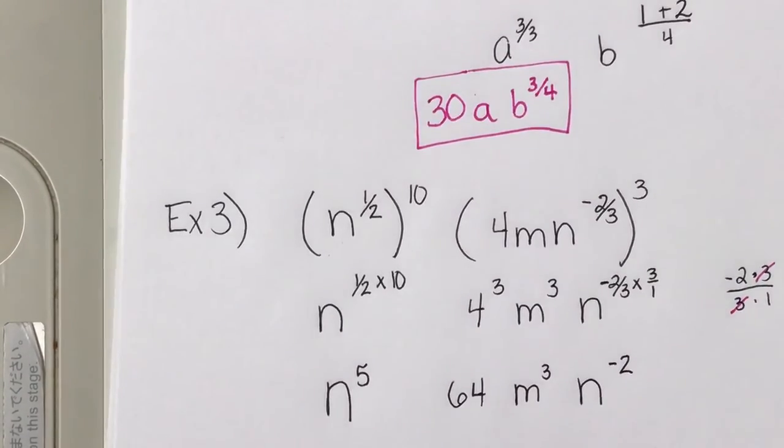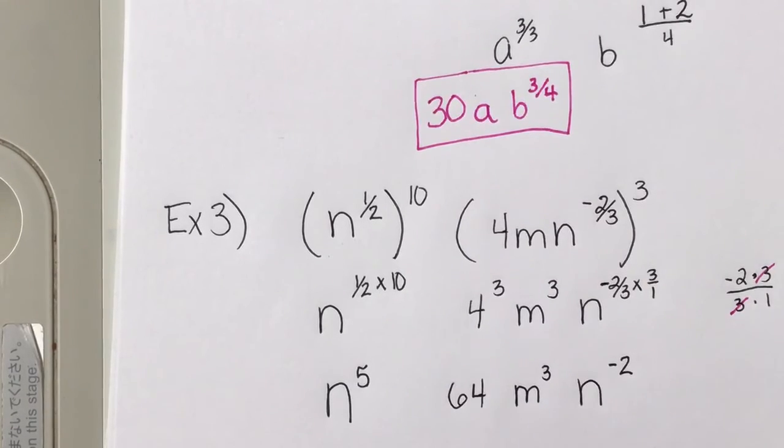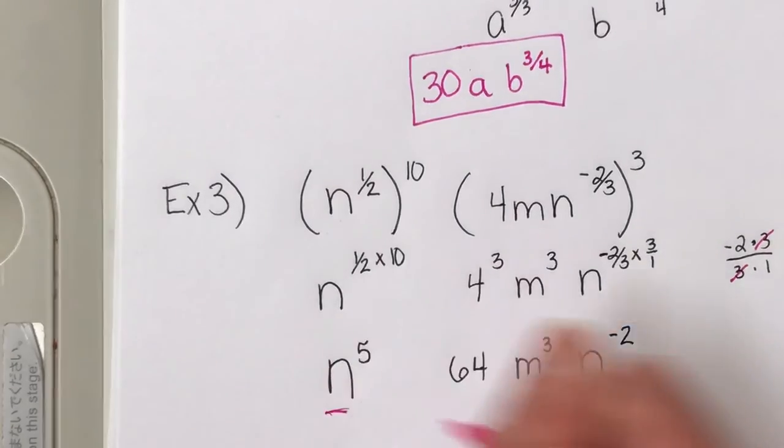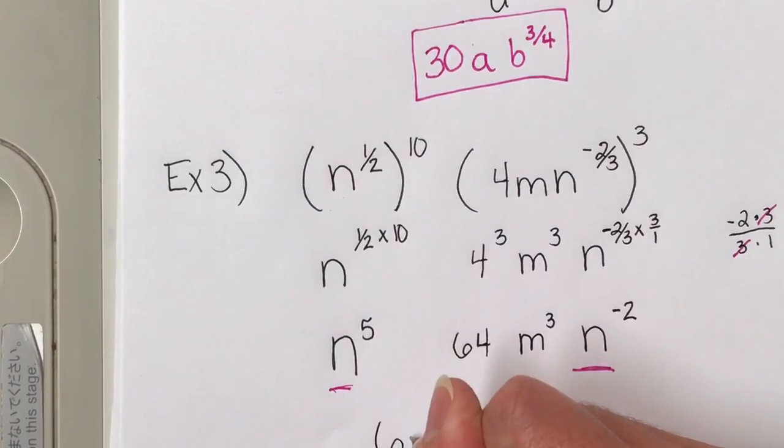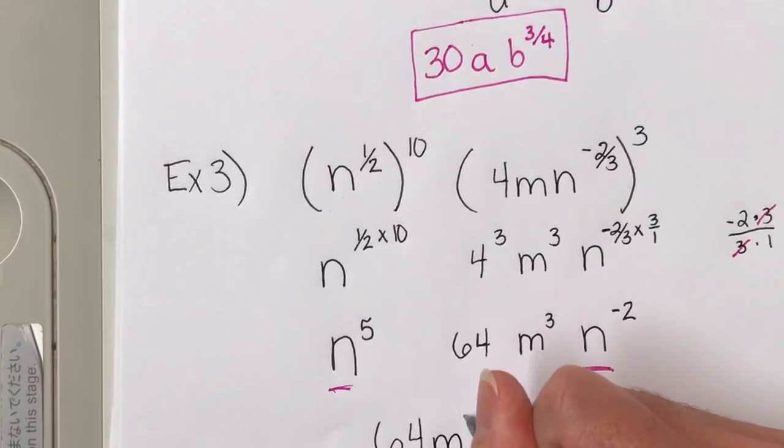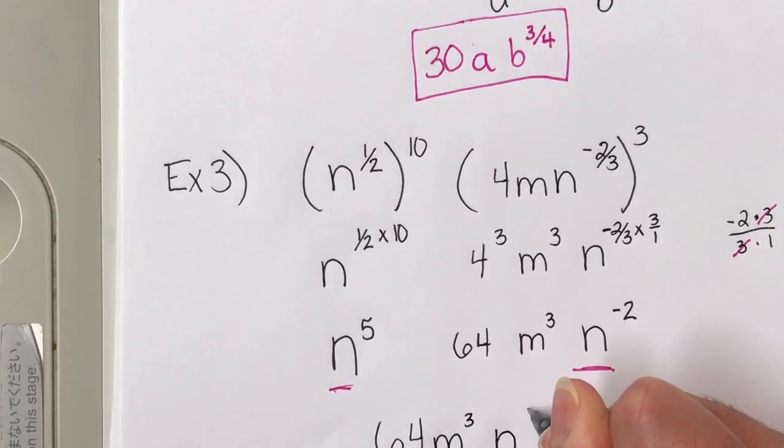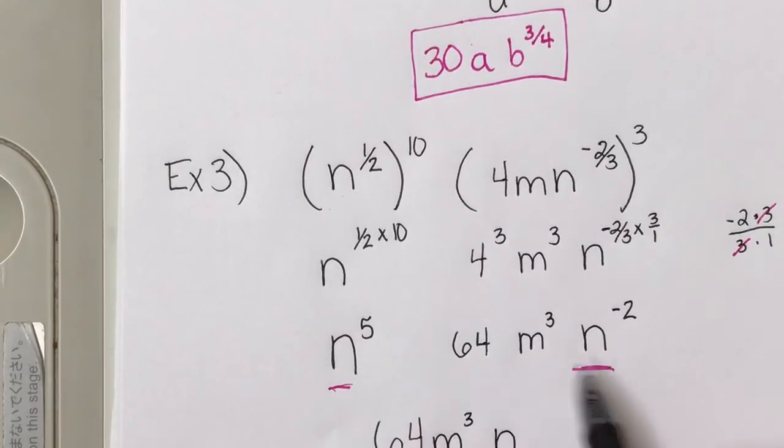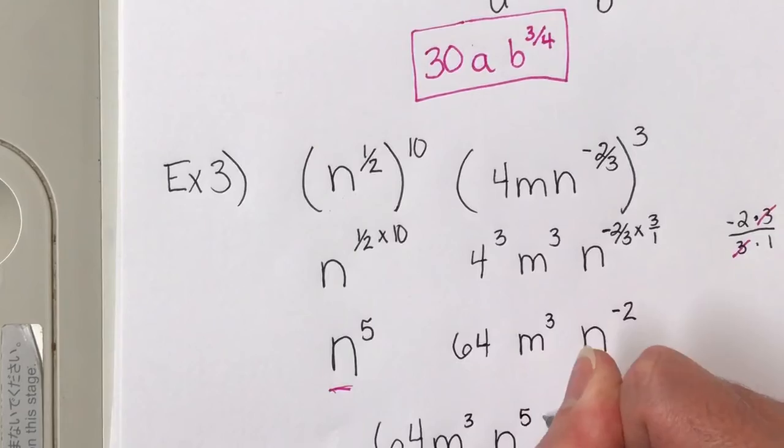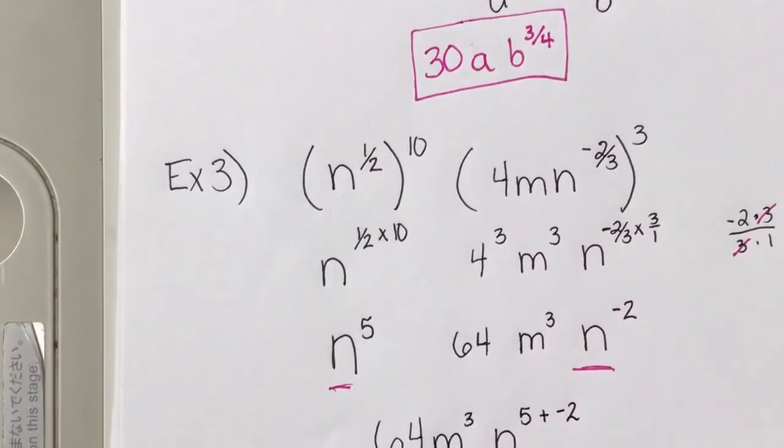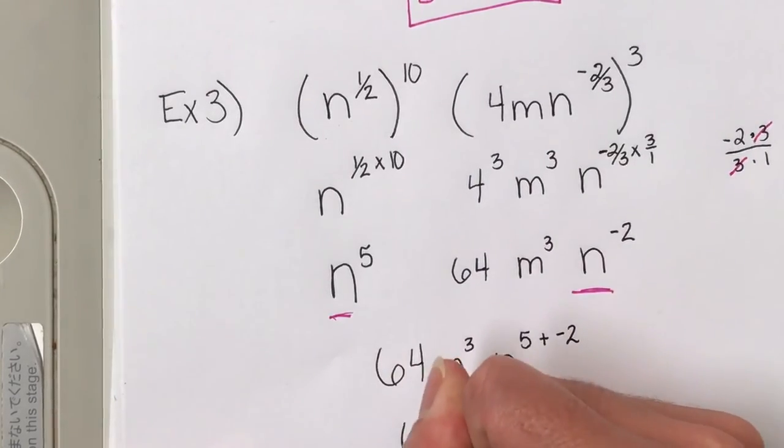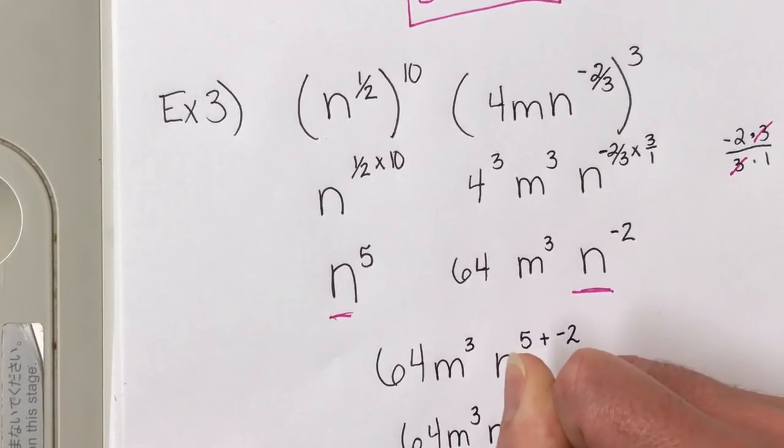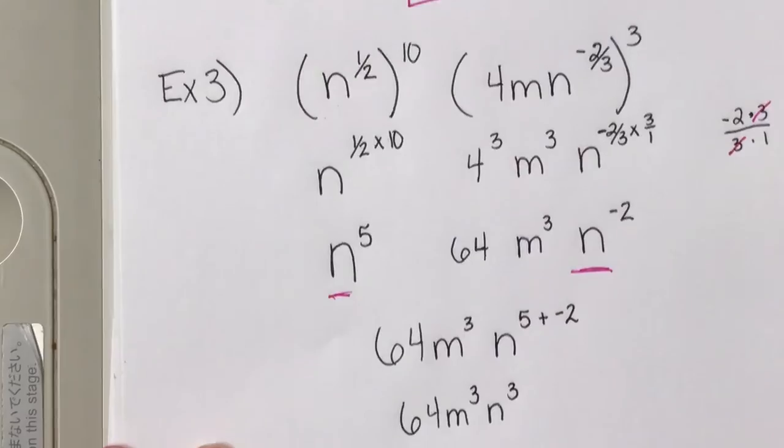So we're getting there. So again, always ask yourself, is this simplified? And so the answer is no, because I have an n here and an n here. And so I can use my commutative property, 64 m to the third. And if I put those together, or I can just go ahead and apply my rule, which is same base, add your exponents. So 5 plus negative 2. Well, 5 plus negative 2 is 3. So 64 m to the third, n to the third. And now we are simplified.